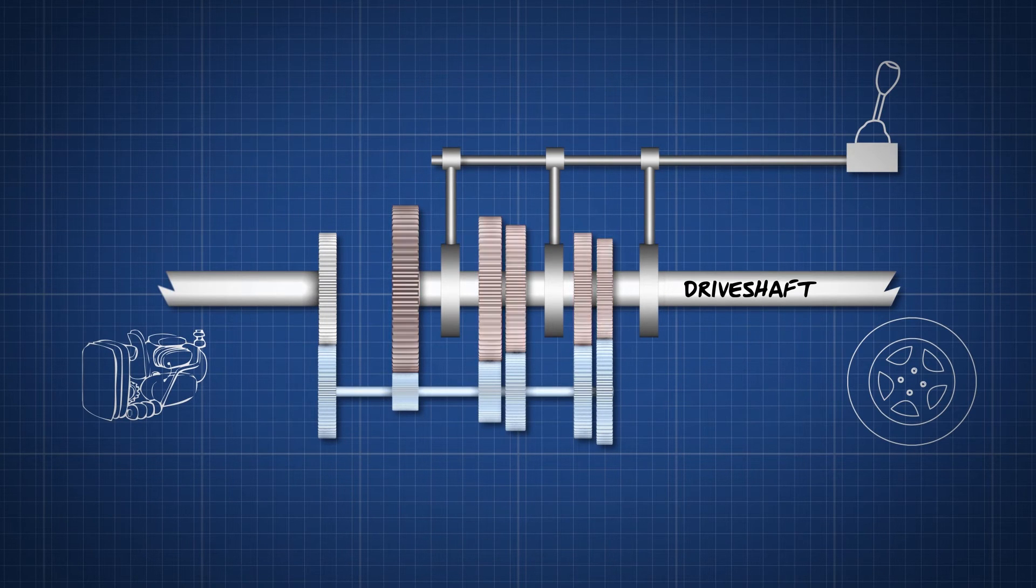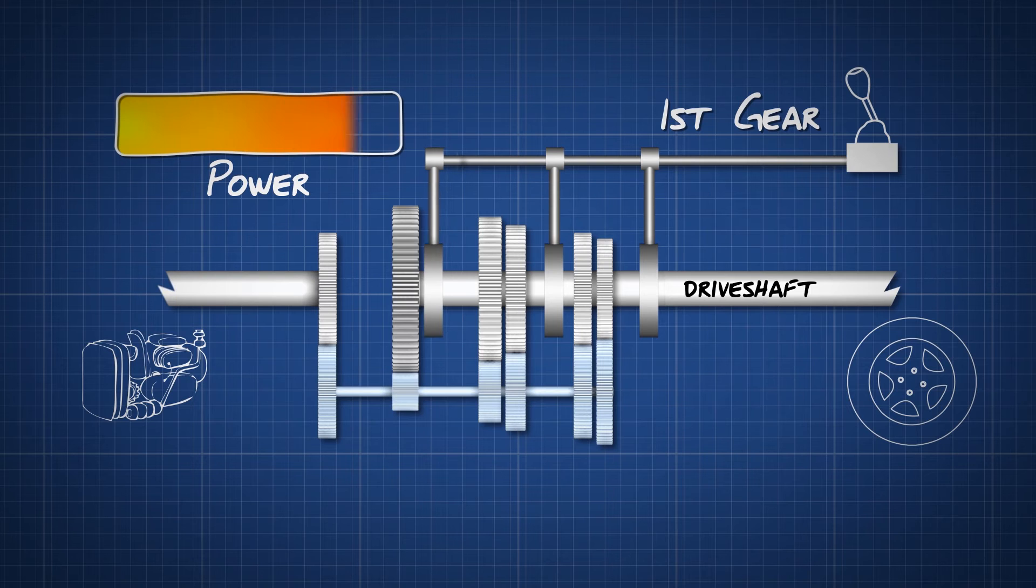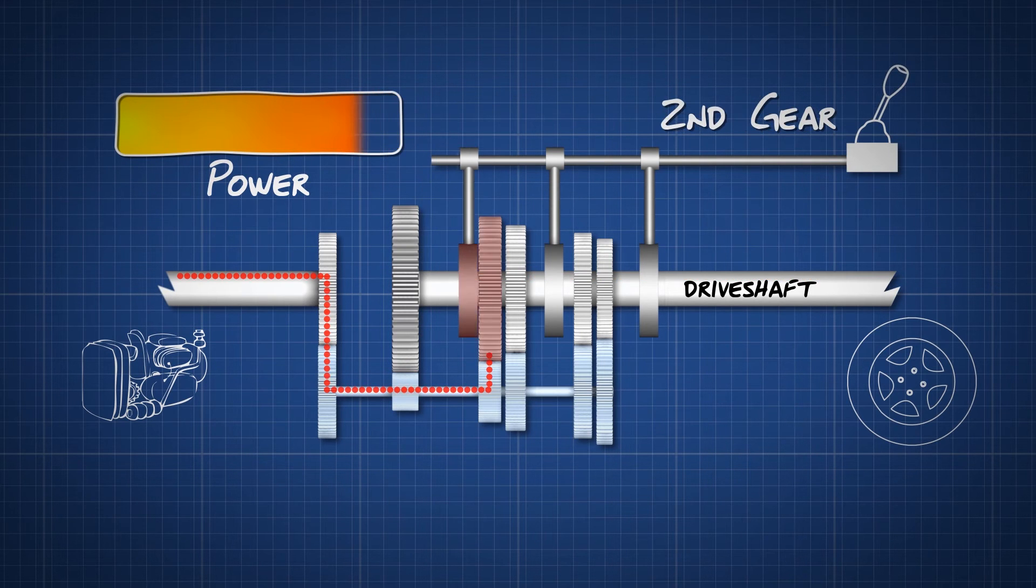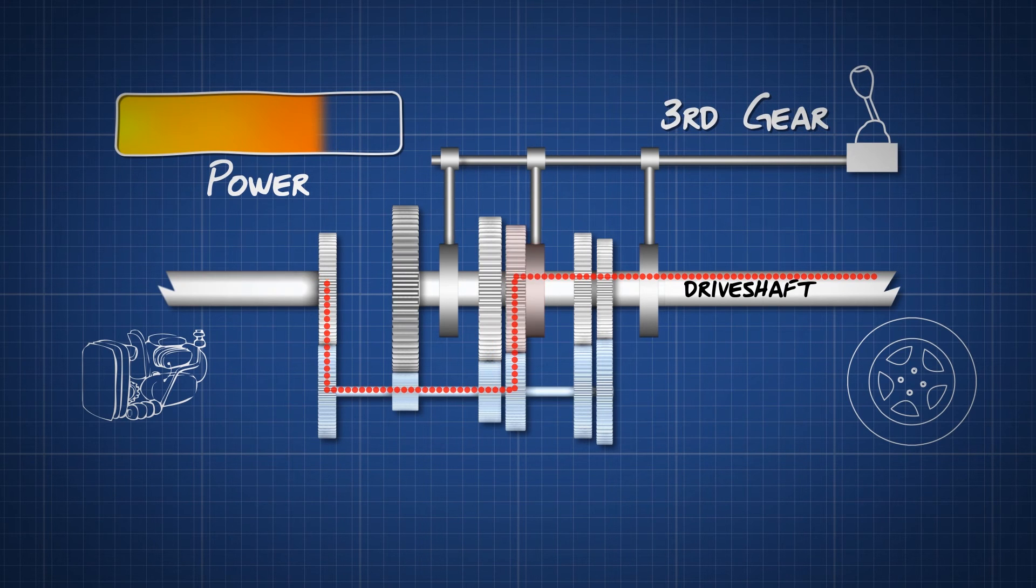The gears are used so the driver can select the required performance for the driving condition. Each cog is different in size and consequently, when selected and connected to the drive shaft, rotates at different speeds which increase or decrease the speed of the output shaft that is connected to the wheels.